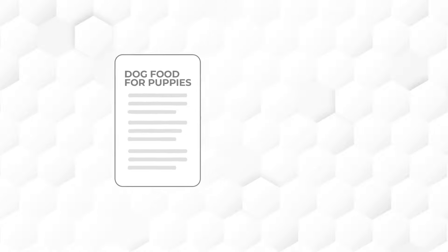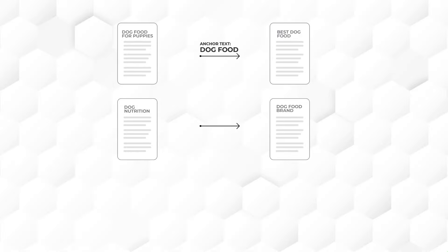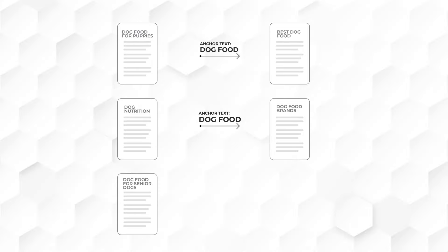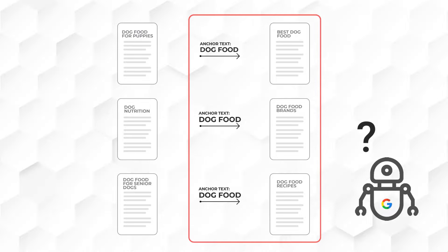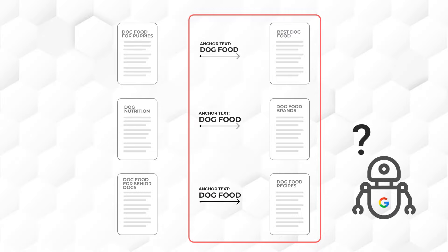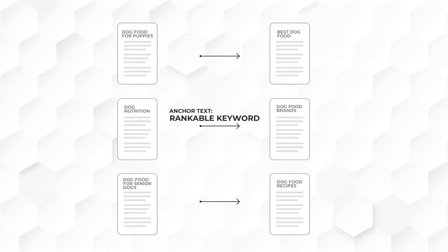Another thing about anchor text is that you do not want to overuse the same anchor text for several articles. For example, let's say you have an article about dog food for puppies and you link to a page about best dog food using the anchor text 'dog food.' Then in another article about dog nutrition, you add a link to a page about dog food brands using the same anchor text 'dog food.' And later, in an article about dog food for seniors, you link to a page about dog food recipes — again using the same anchor text 'dog food.' Search engines would probably be confused, because 'dog food' describes all these pages but they are about different topics. So it's more helpful to use specific descriptive anchor text, ideally with a rankable keyword.